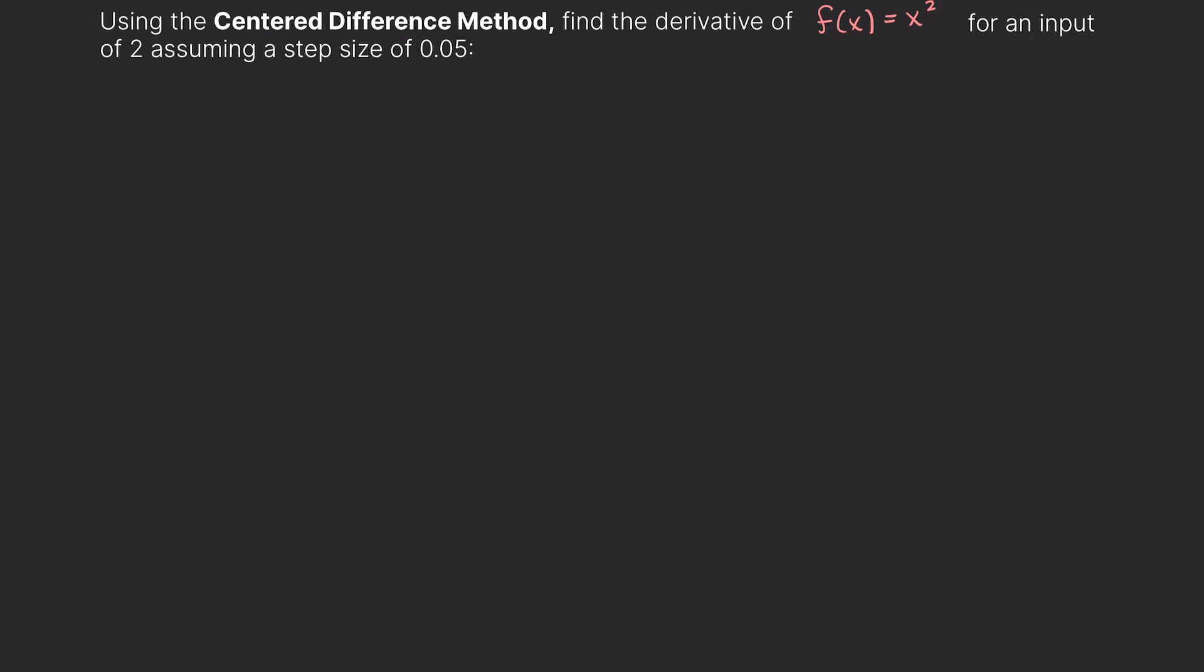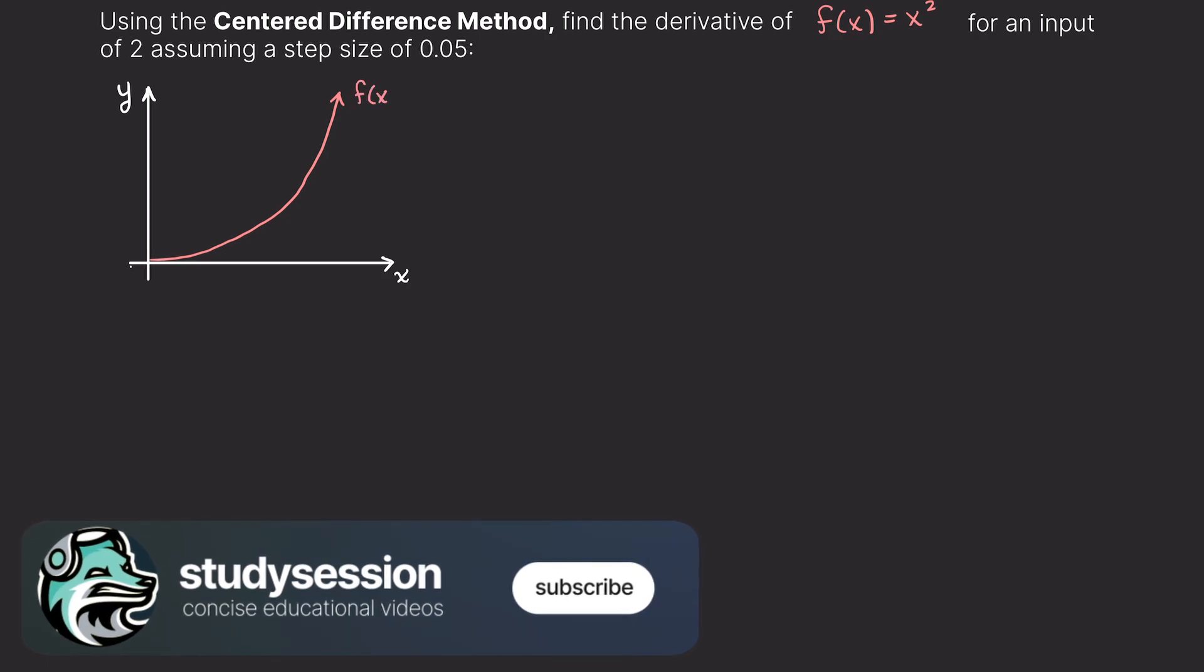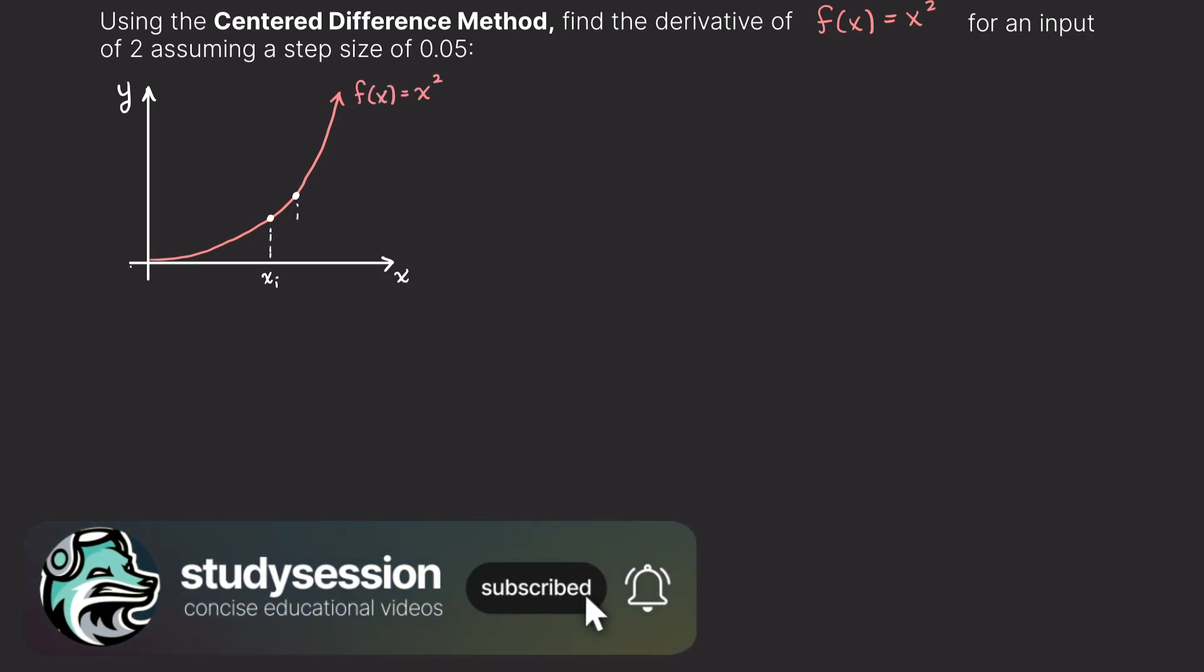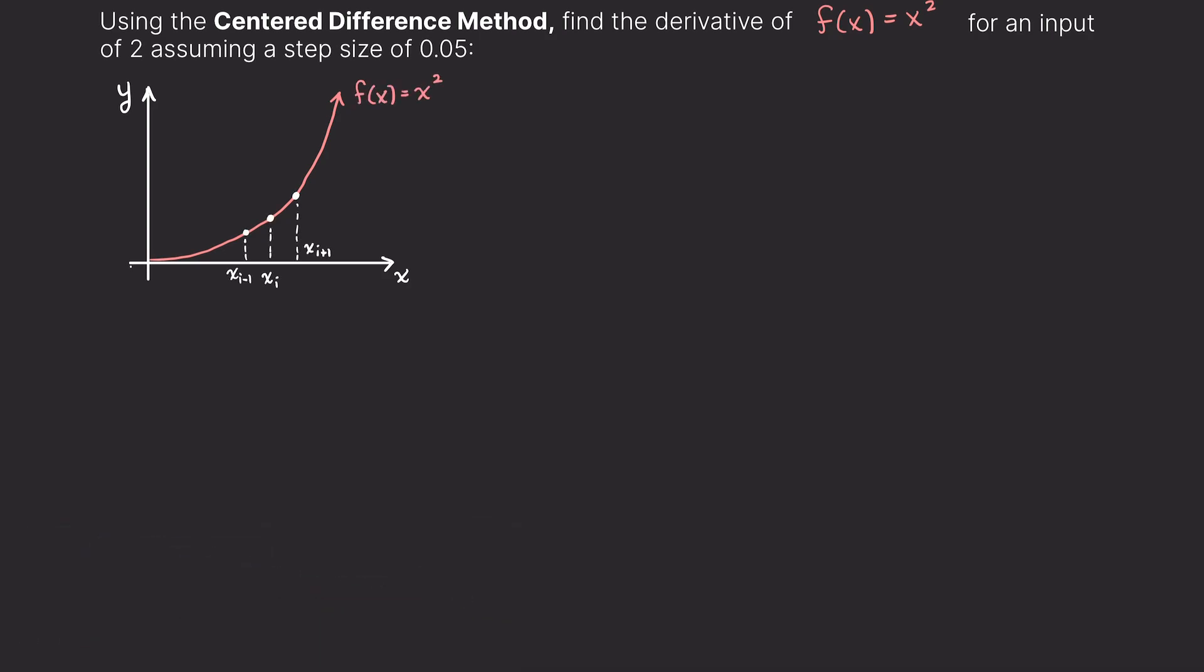Let's get to our first problem now. We are given the function f(x) = x². We are asked to approximate the derivative of this function at x = 2 using the Centered Difference Method. We are also told to use a step size of 0.05.